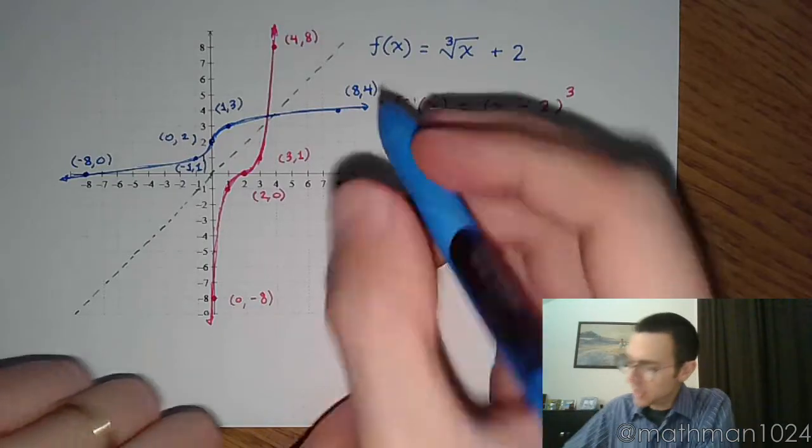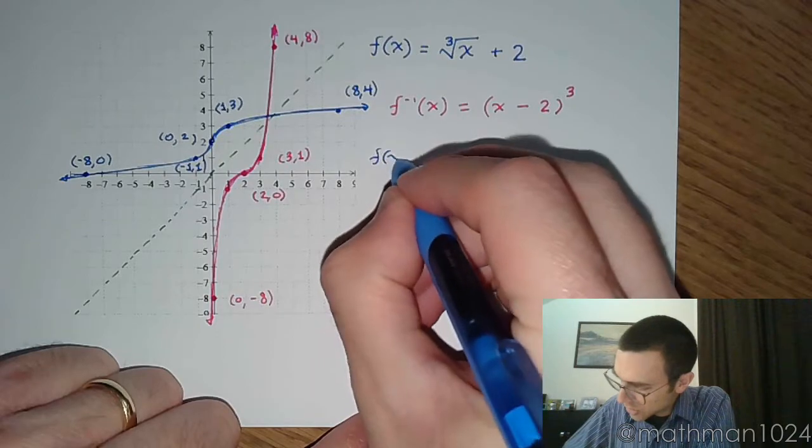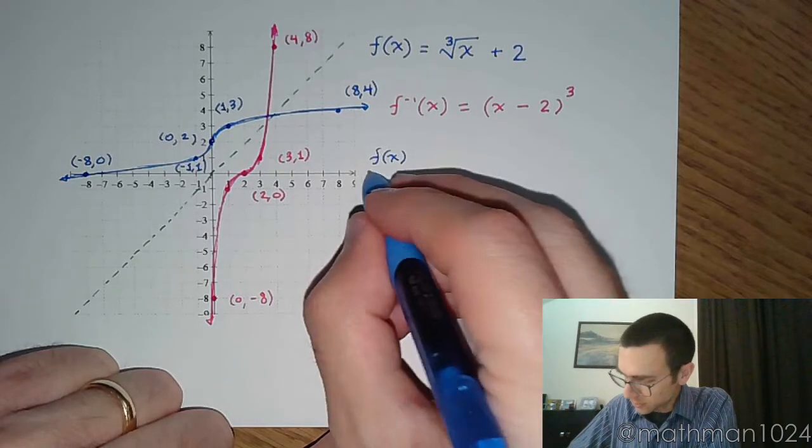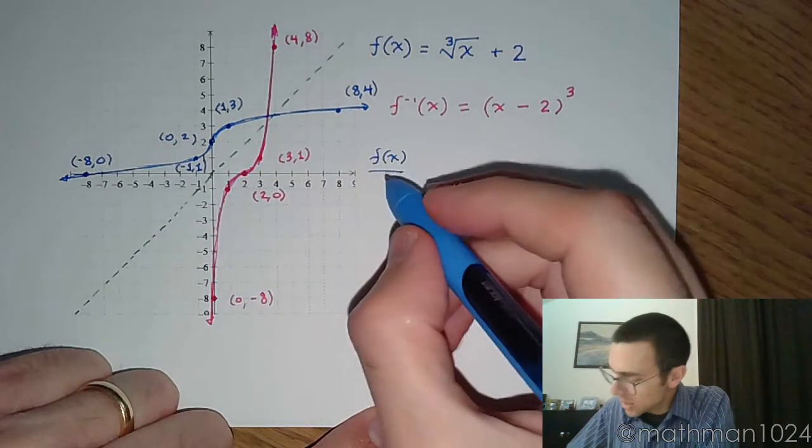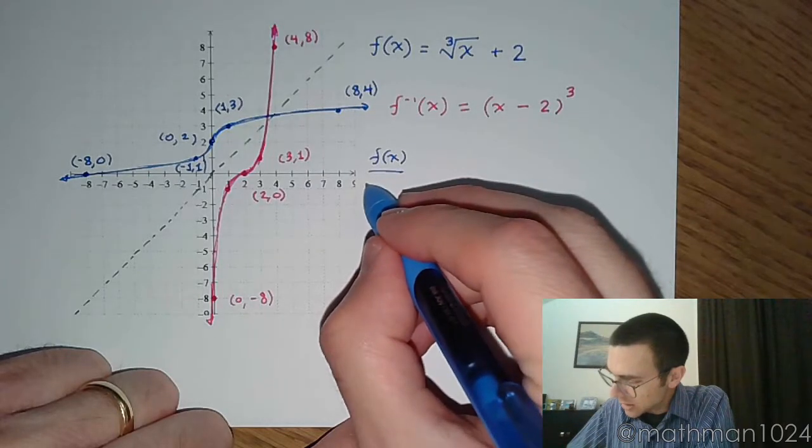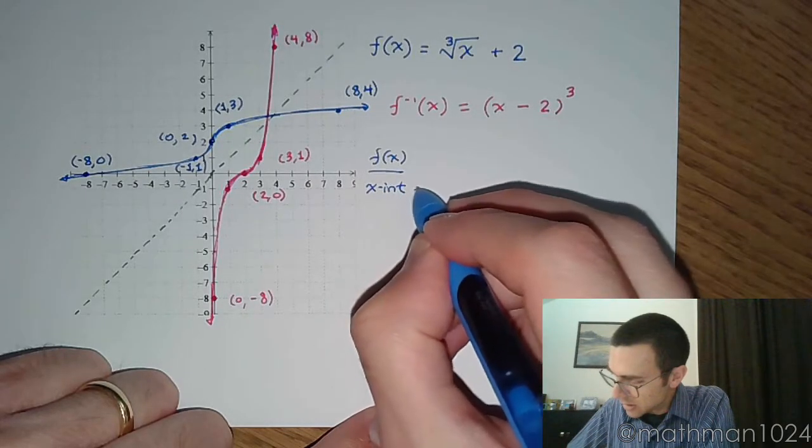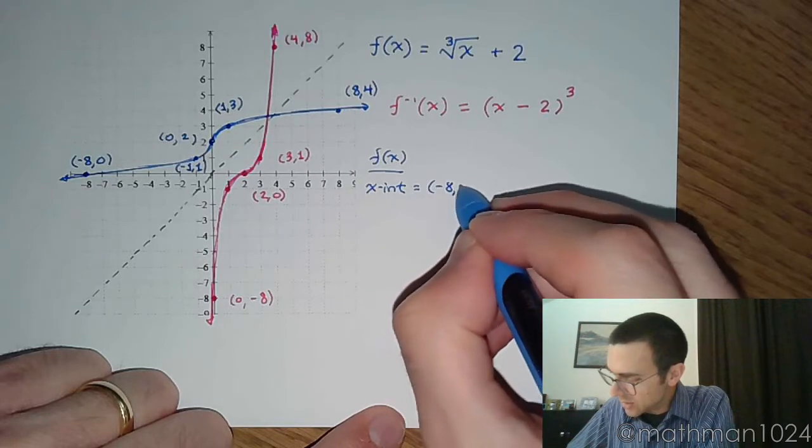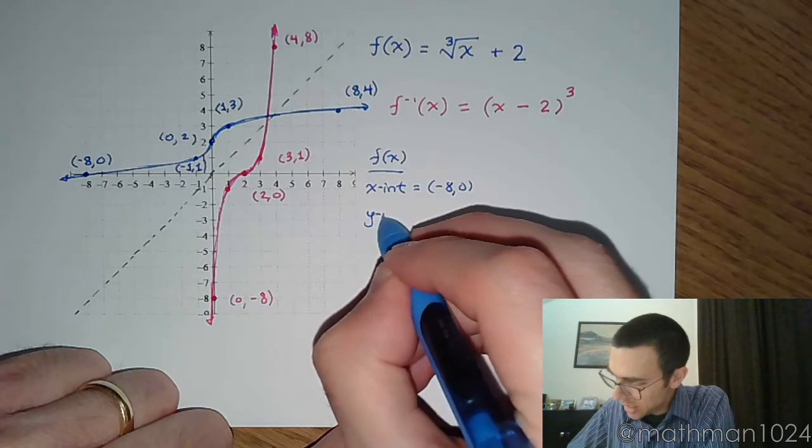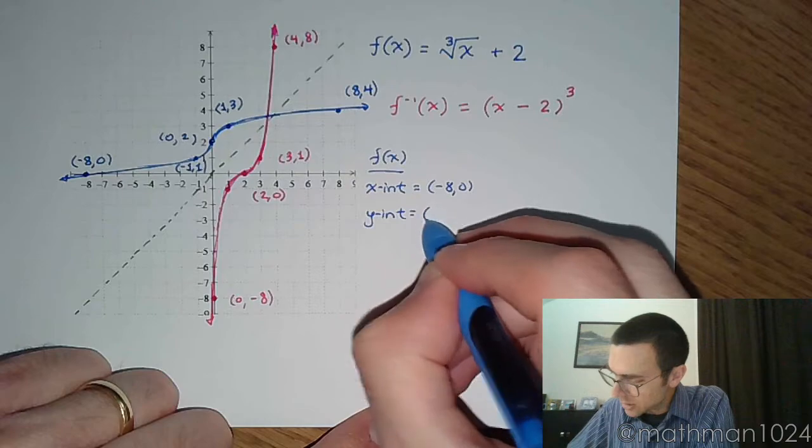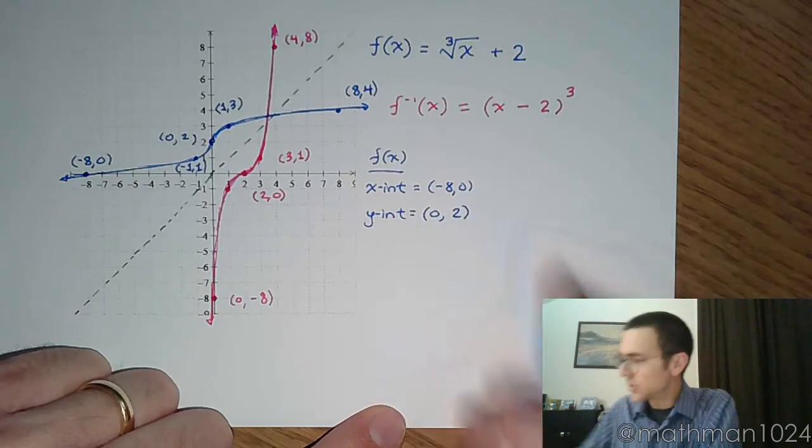But again, I want to point out some neat things about this. So for your function, for your original f(x), you had an x-intercept that was at (-8, 0). And you had a y-intercept at (0, 2).